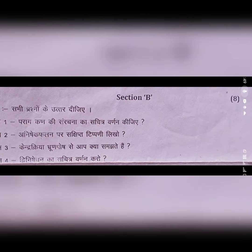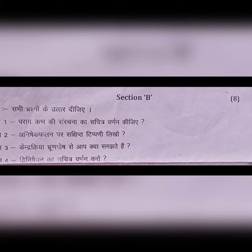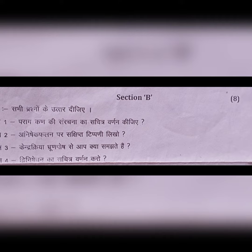Doosra section hai hamaara Section B, jis mein aapko 2-2 marks ke prashn diye gaye hain. Ismein aapko sabse pehle parakh karna hai, uski sanrachna ka varnan kijiye. Next, falan batana hai — kya hota hai kendri ke brok portion ya bhrun posh. Phir next hota hai hamaara double fertilization, yaani ki double fertilization ko aapko chitra sahit batana hai.